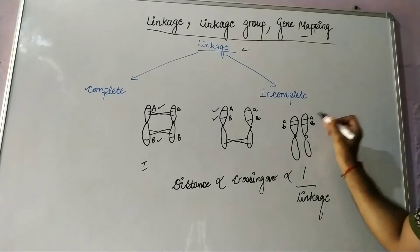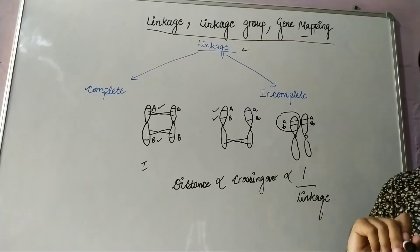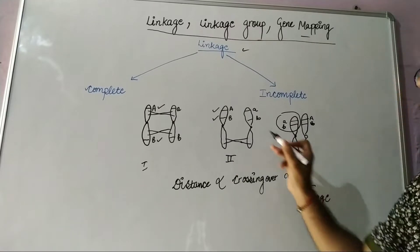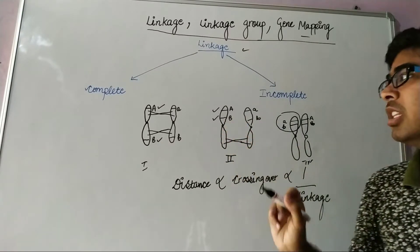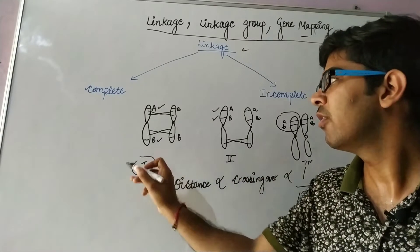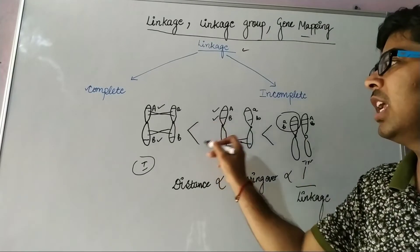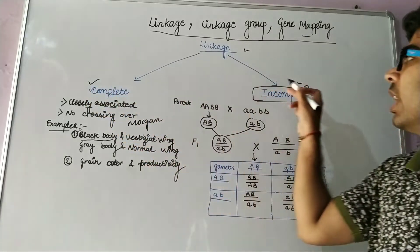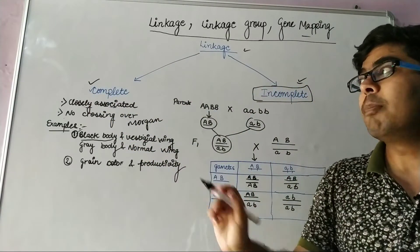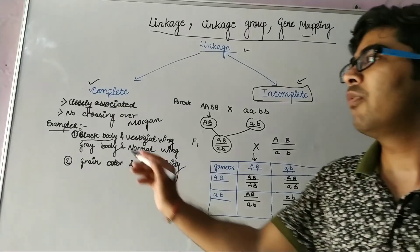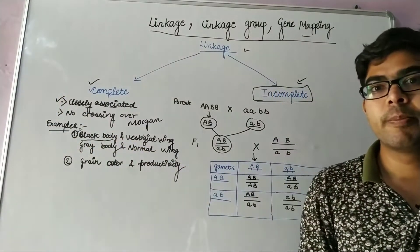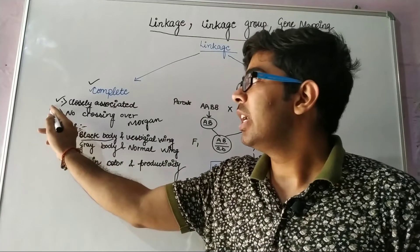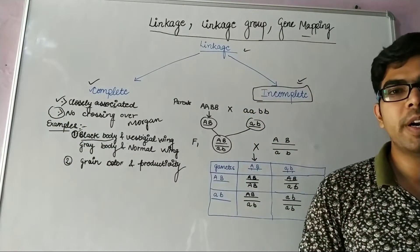The distance between genes is inversely proportional to linkage. That's why the genes A and B in the third situation are more linked compared to the second, and in the second situation they are more linked than in the first. There are two types of linkage: complete linkage and incomplete linkage. In complete linkage, the two genes are found closely associated with each other, suggesting that no crossing over occurs between them.